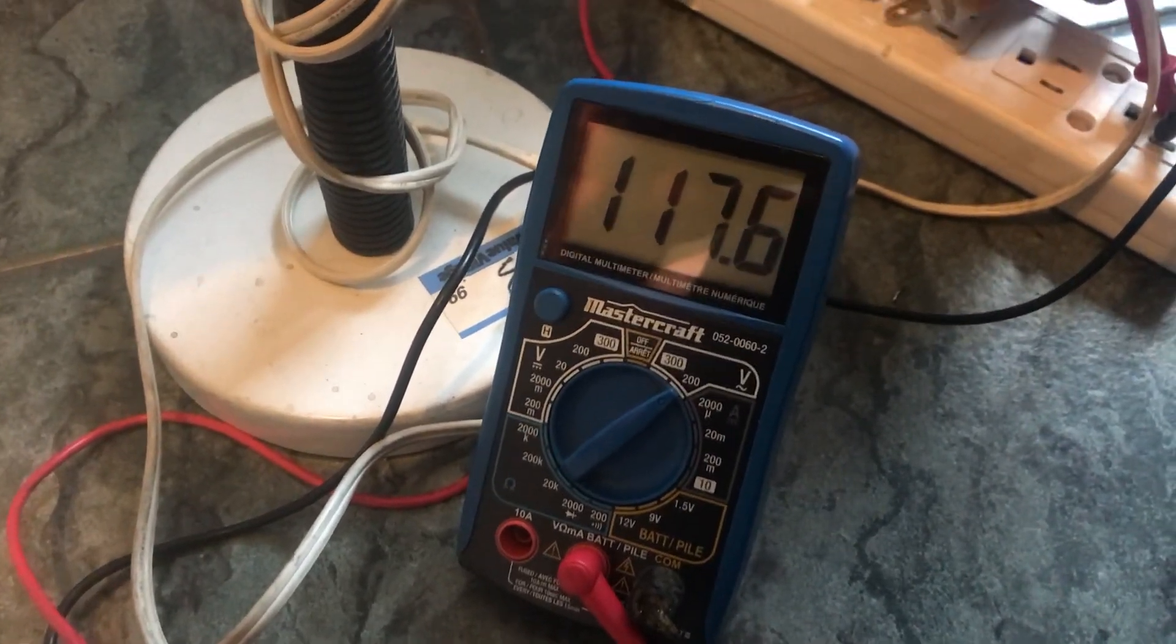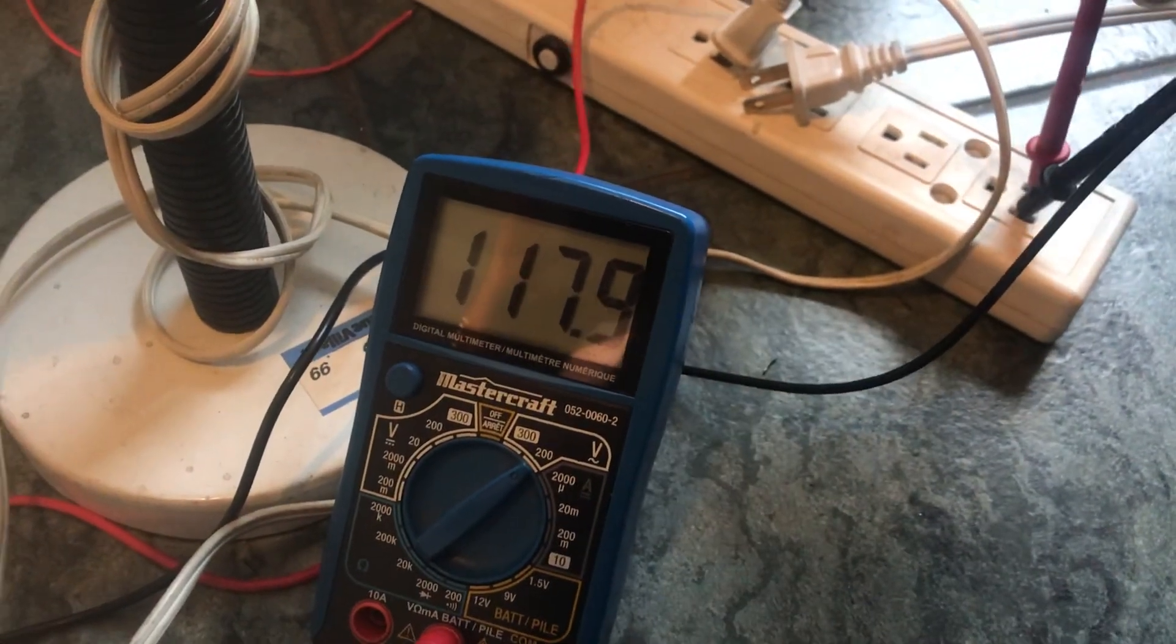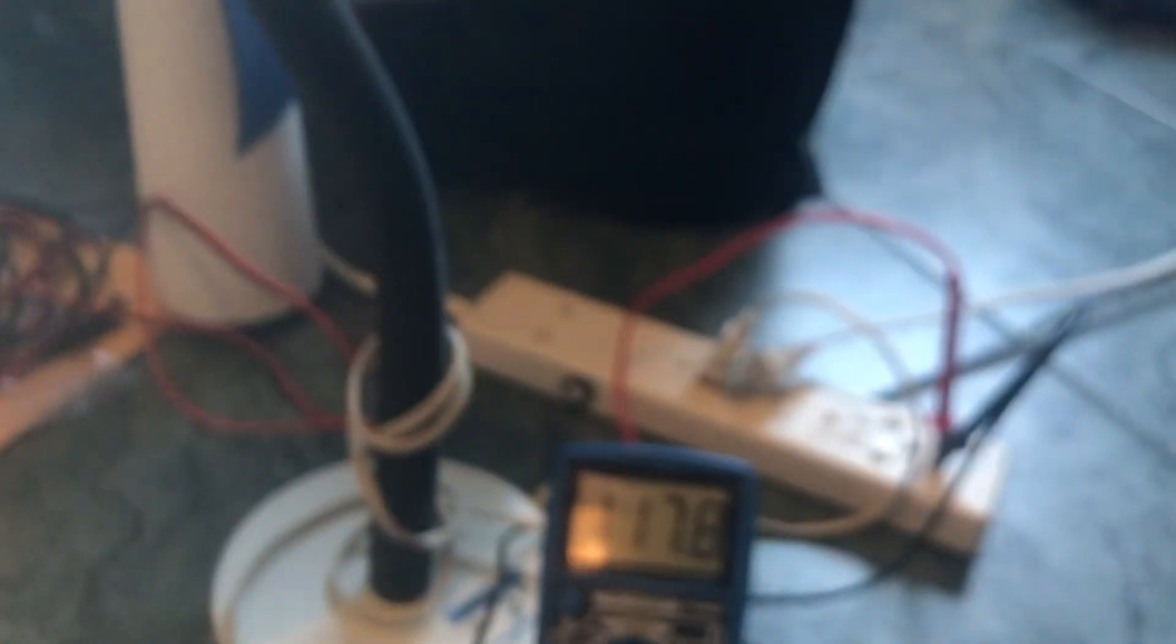Without screwing up the volt meter, the light is on right now. There we go, 117 volts. That's with the light on and no fan.